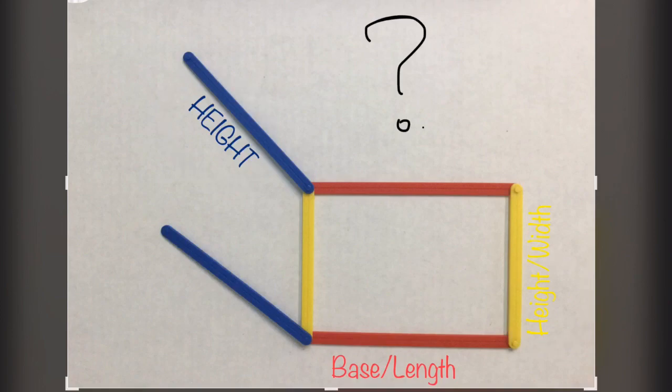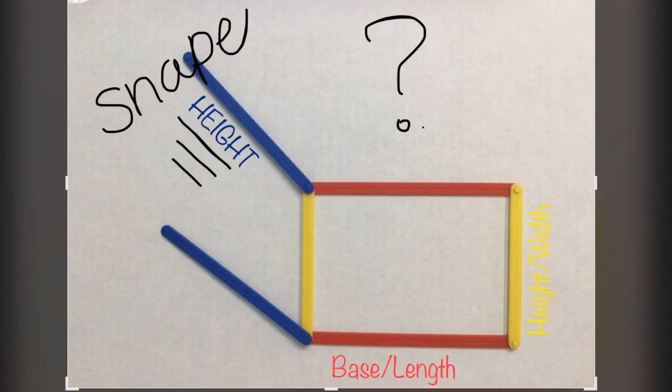First of all, we know that we would call base also length, height was also width, but the height here is actually the height of the shape. It's how tall the shape is. Where the height over here in yellow is actually the height of the rectangle, but we can also call that the width.